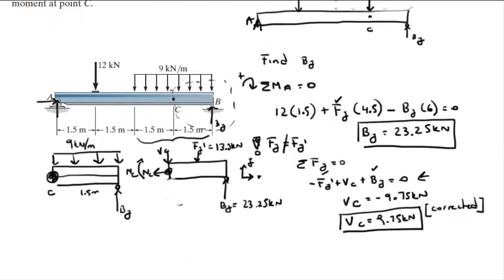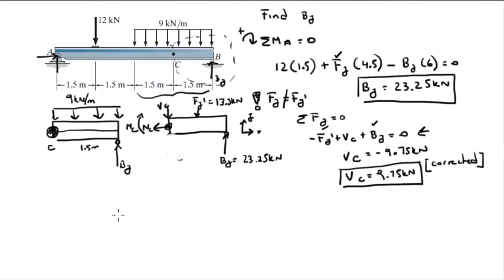Now we're going to find the normal. Normal is easy to find. Sum of the forces on X equals zero. The only force on X is the normal, so the normal equals zero.